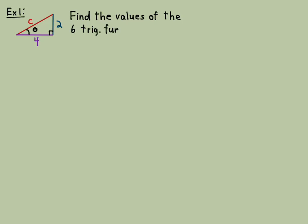Suppose we have this right triangle and we know the lengths of two of the sides, two and four. So the opposite side to theta is two, the adjacent side to theta is four, and the hypotenuse I called C. This problem says find the values of the six trig functions for the angle theta.